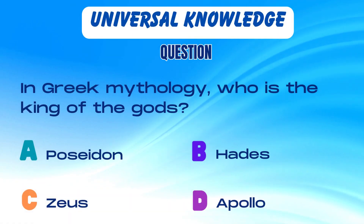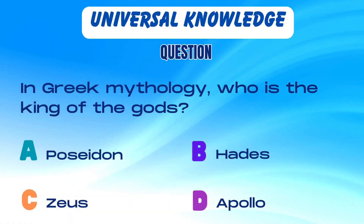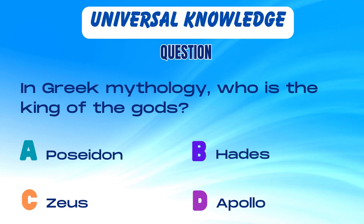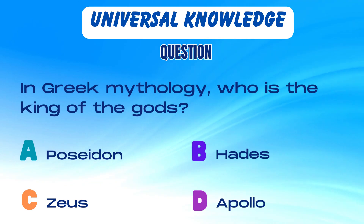In Greek mythology, who is the king of the gods? Is it A. Poseidon, B. Hades, C. Zeus, or D. Apollo?